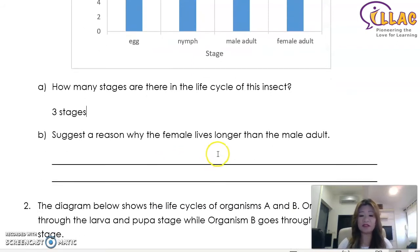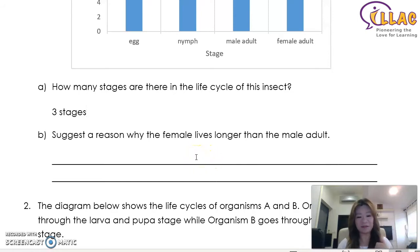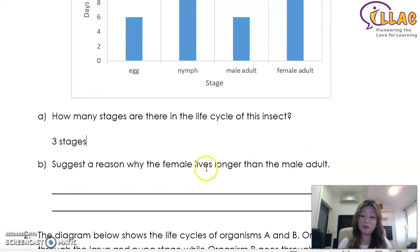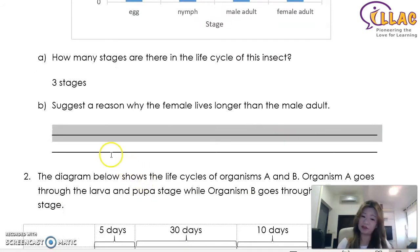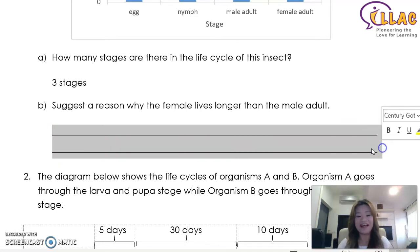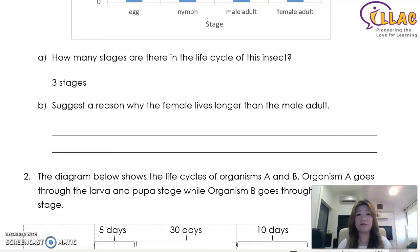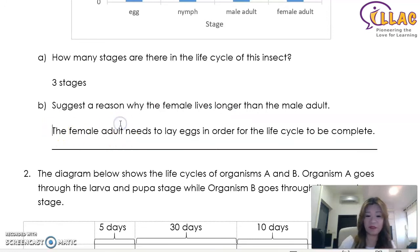The next question: suggest the reason why the female lives longer than the male adult. This is a common question. The female lives longer because she is the one that needs to carry on the reproduction process — the female needs to lay the eggs in order for the life cycle to be complete. That is the answer. It is not because of diet or lifestyle.